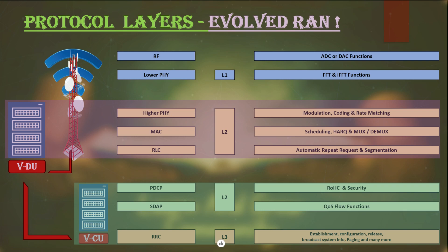The distribution unit takes care of higher physical layer tasks like modulation and coding of signals. The distribution unit also handles scheduling, traffic management, multiplexing and demultiplexing in the MAC layer, as well as RLC responsibilities including automatic repeat requests and segmentation.